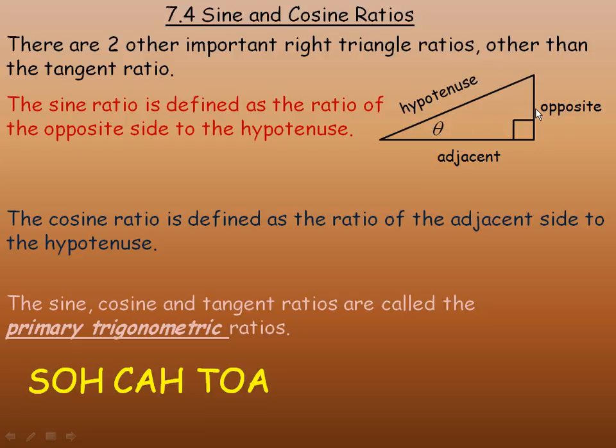The angle straight across from it or opposite is called the opposite side. The side right beside the angle that's not the hypotenuse is called the adjacent. And the side that is opposite the right angle is called the hypotenuse. So that side we do need for these two trig ratios. We did not need that for the tangent ratio.